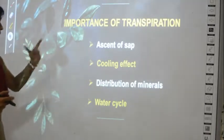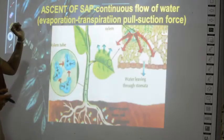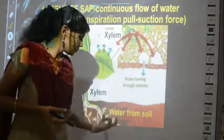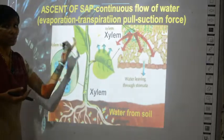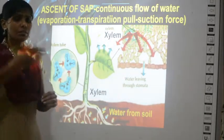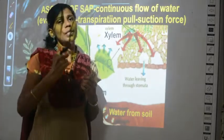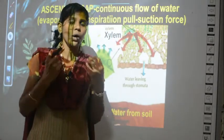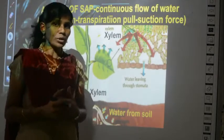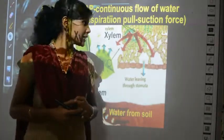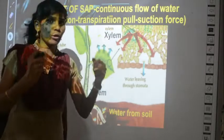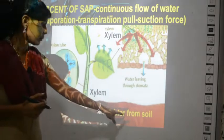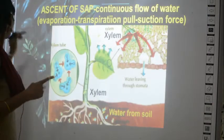Ascent of sap means the movement of water from the root portion of the plant to the other parts. This movement of water is a continuous flow — water from the root continuously flows to the upper parts. To suck the water up, you need a force, and that force is called transpiration pull.